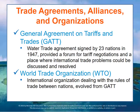The General Agreement on Tariffs and Trade, or GATT, originally signed by 23 nations in 1947, provides a forum for tariff negotiations and a place where international trade problems can be discussed and resolved. More than 100 nations abided by its rules.